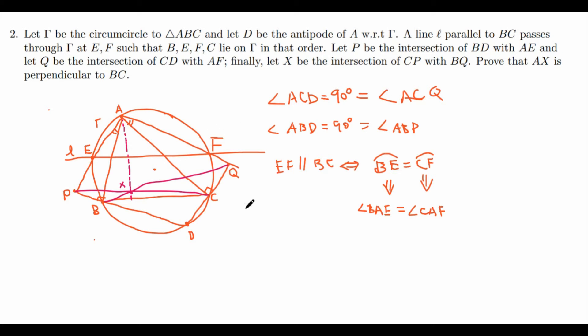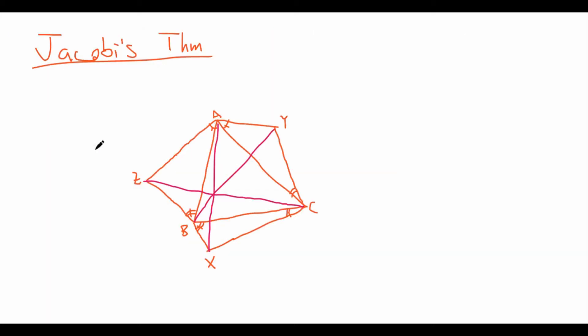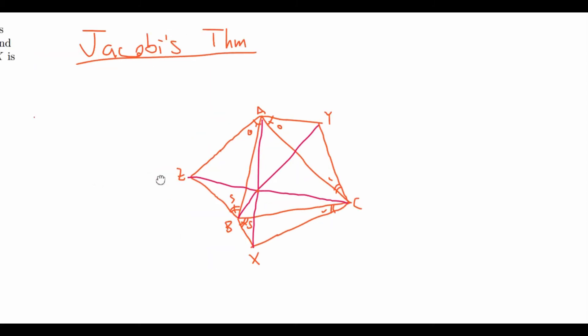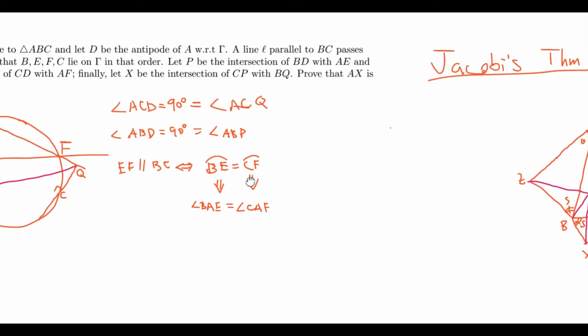And now, in order to solve the rest of the problem, I will use something called Jacobi's theorem. Jacobi's theorem states that in a triangle ABC, if we pick X, Y, and Z such that the marked angles are equal, so this one and this one, this one and this one, and this one and this one are equal, then we have that AX, BY, and CZ are concurrent. So let's see how we might use this theorem in our problem right now.